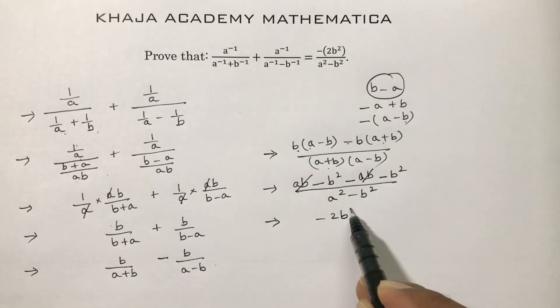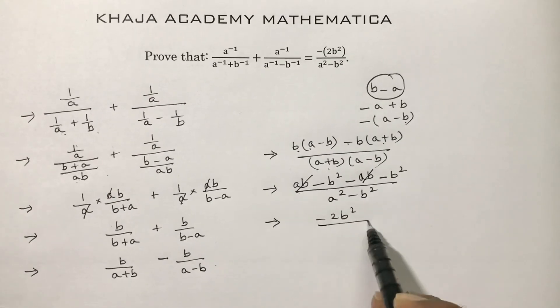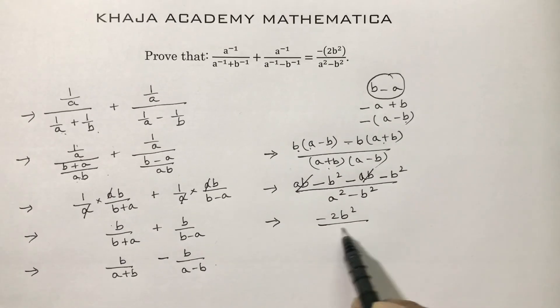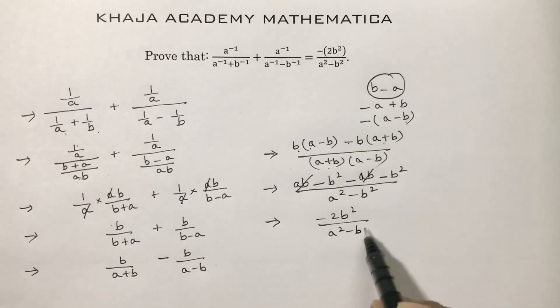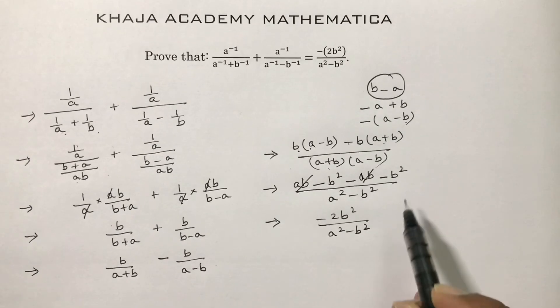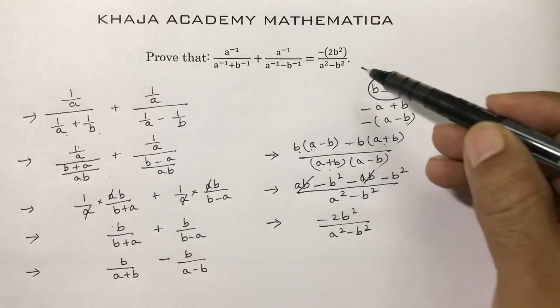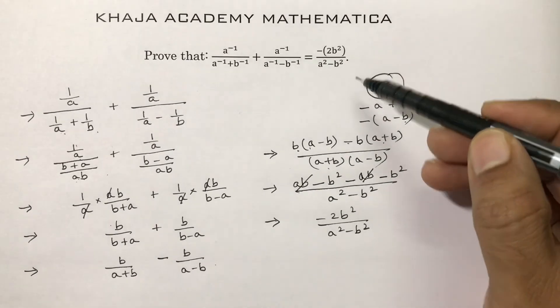The ab and ab cancel, leaving −b² − b² = −2b², over a² − b². So the required answer is −2b²/(a² − b²).